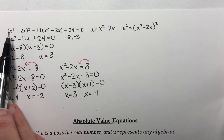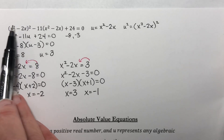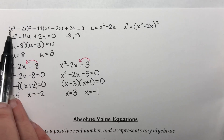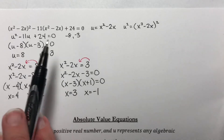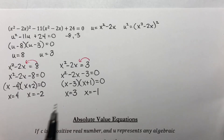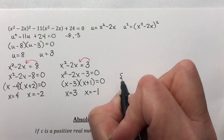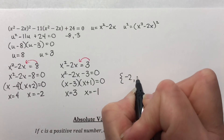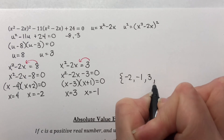I get four solutions, which is what I expected, because squaring that term gives x to the 4th as the largest exponent overall. The four answers are negative 2, negative 1, 3, and positive 4.